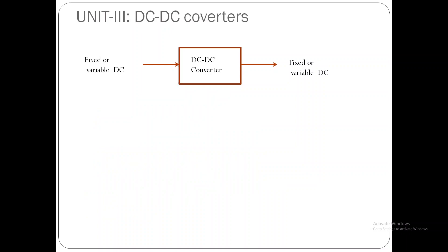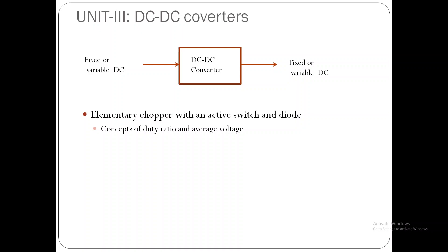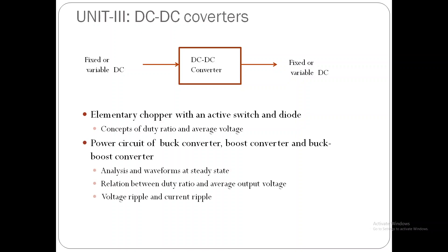In Unit 3, we shall discuss DC to DC converters, where input can be fixed or variable DC and output also can be fixed or variable DC. We shall discuss the elementary DC to DC converter with active switch and diode, the concept of duty ratio and average voltage — which forms the basis for analysis. Then we shall discuss buck converter, boost converter, and buck-boost converter in detail, analyzing their operation and performance for various kinds of loads. At the end, we shall briefly introduce isolated DC-DC converters.